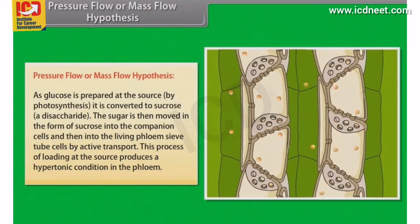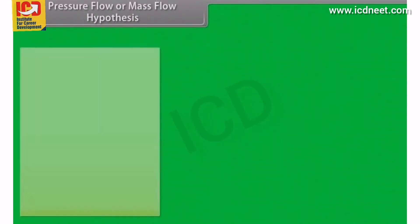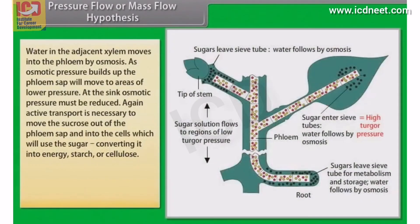This process of loading at the source produces a hypertonic condition in the phloem. Water in the adjacent xylem moves into the phloem by osmosis. An osmotic pressure builds up, and the phloem sap will move to an area of lower pressure.